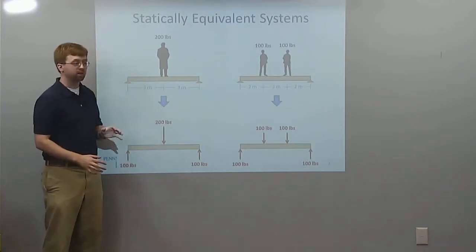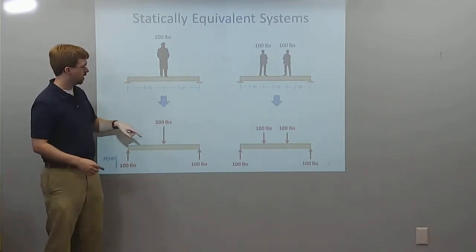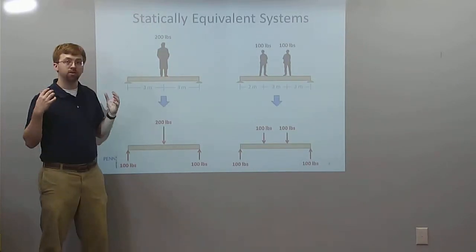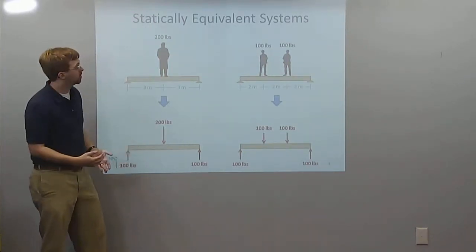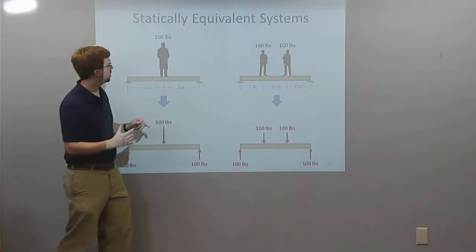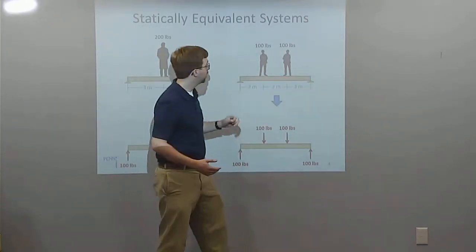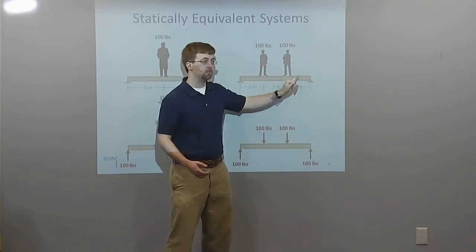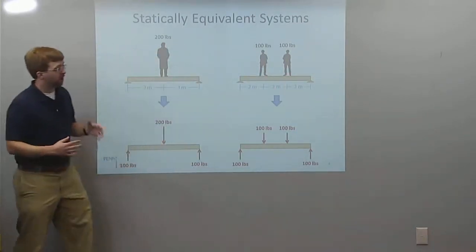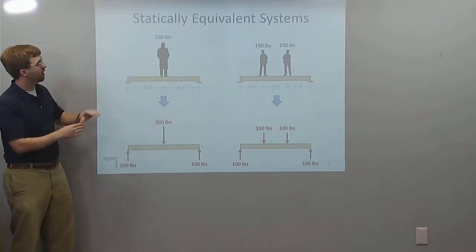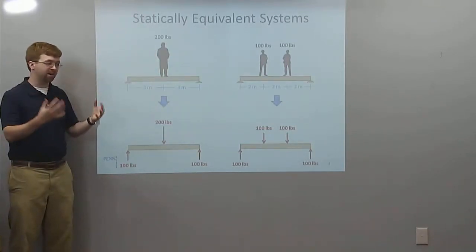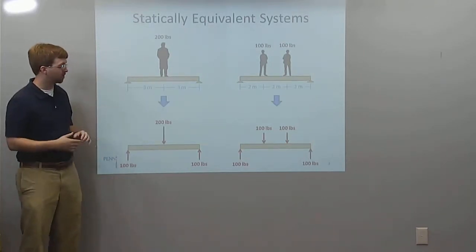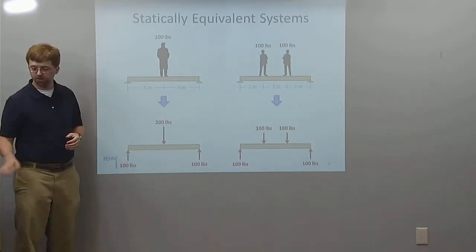These two sets of forces — the one force of the 200-pound man or the two 100-pound children — are statically equivalent to one another. A distributed force is even further: it would be a third example, like a bunch of very tiny children all lined up on the beam. If we have all these little tiny children, we want to find the one force that would cause the same reaction forces as all of those little tiny forces.